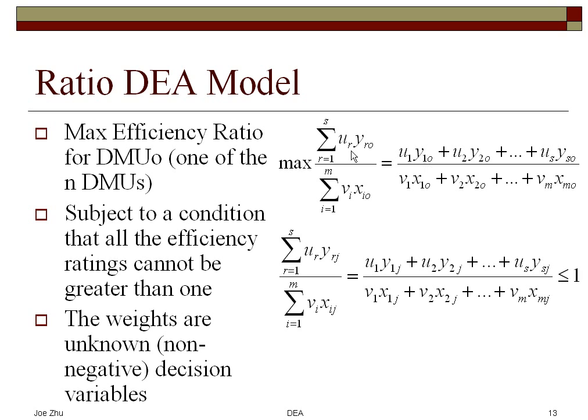Now here, this is the efficiency for a DMU0, which is on the evaluation. And then these are the efficiency ratios for all the DMUs. So what this model says is basically, given that we assume the ratio should be less than or equal to 1, between 0 and 1, find a set of weights so that one particular DMU's efficiency can be maximized.